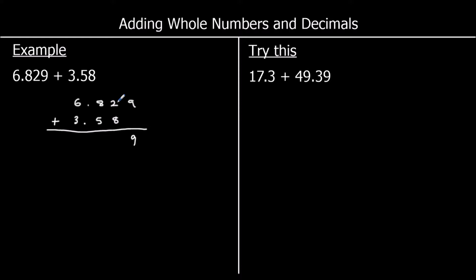Then the tenths: 2 plus 8 is 10. I can't put 10 in a column, so I put the zero in the column and carry one into the next column, which is tenths. I've got 8 plus 5 plus 1. 8 plus 5 is 13, plus 1 is 14. I'll put the 4 in the tenths and carry one over into the ones.